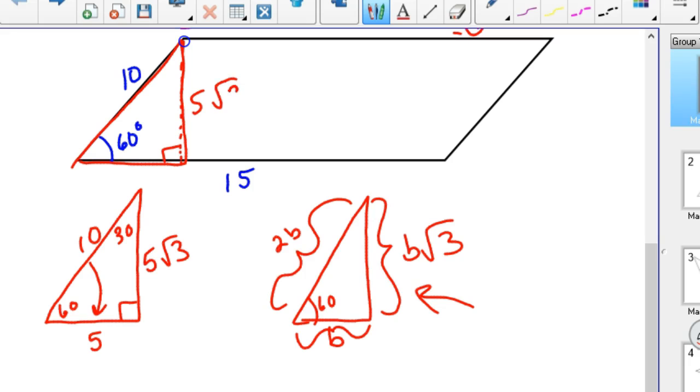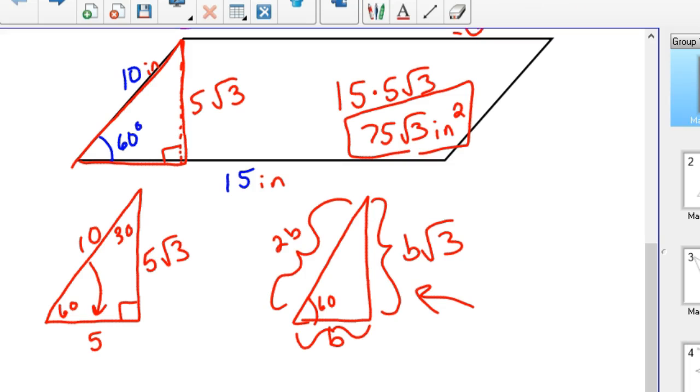So the area of this parallelogram is 15 times 5 square root of 3, which would be 75 square root of 3. And if these were say inches, it's going to be inches squared. That's the exact answer, and that's what the ACT or college entrance exams are going to give for you.